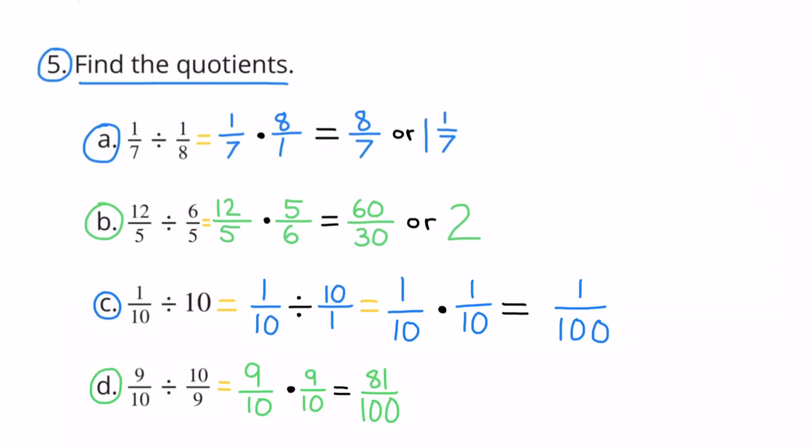5d. Nine-tenths divided by ten-ninths. That equals nine-tenths times the reciprocal of ten-ninths, which is nine-tenths. Nine-tenths times nine-tenths equals eighty-one-hundredths, or eighty-one over a hundredth.